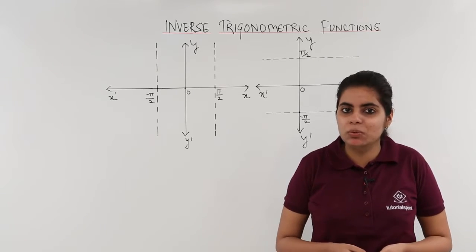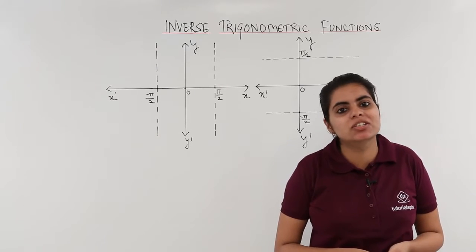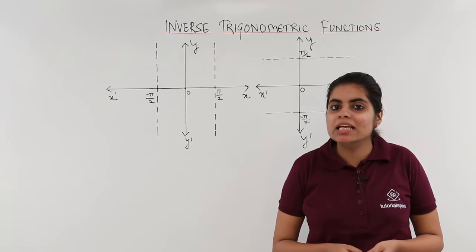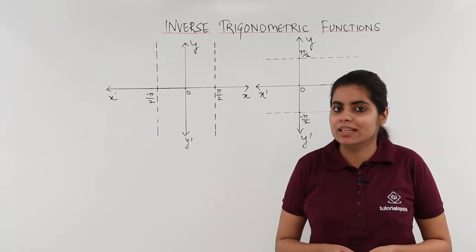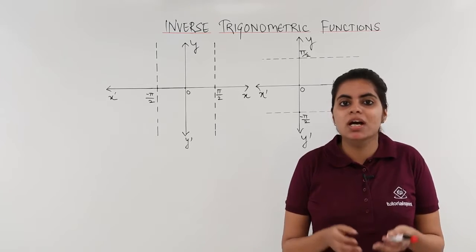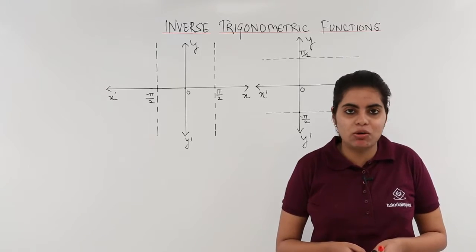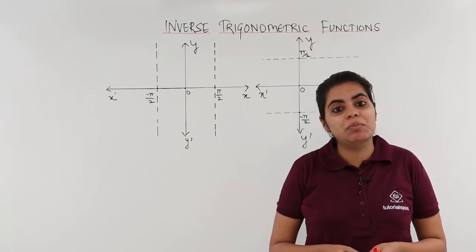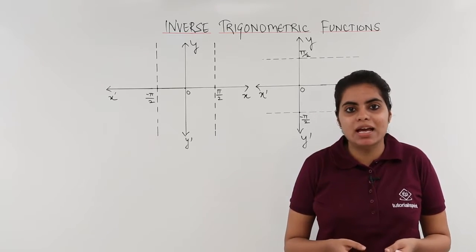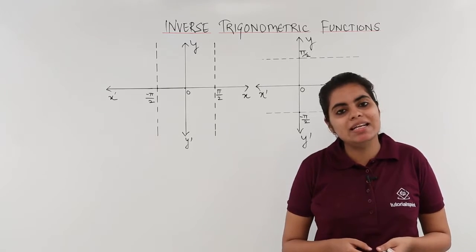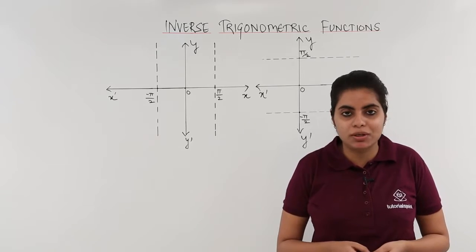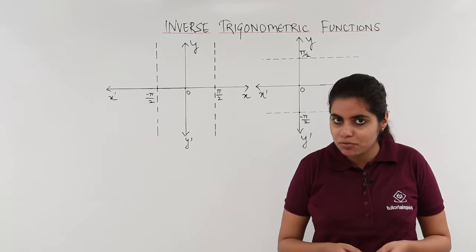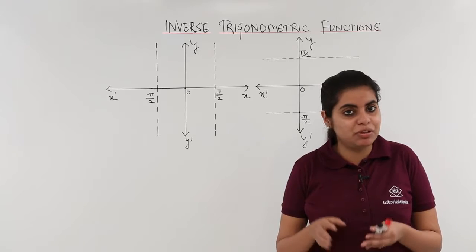Tangent function we already know. We know that tan function is the one wherein some things are not defined. That means tan pi by 2, tan minus pi by 2, these values are not defined because tan pi by 2 is infinity as we all know and tan minus pi by 2 is also not defined.